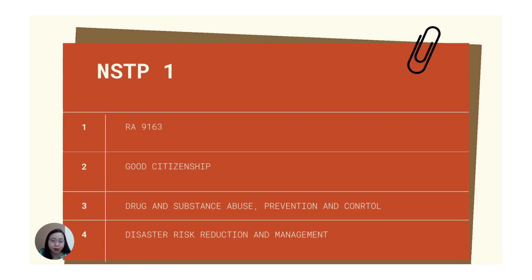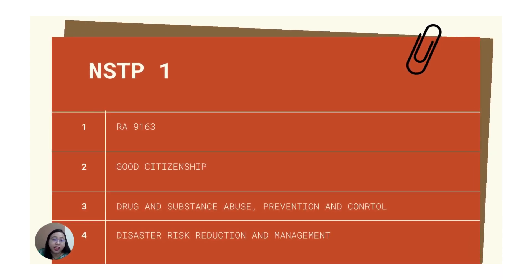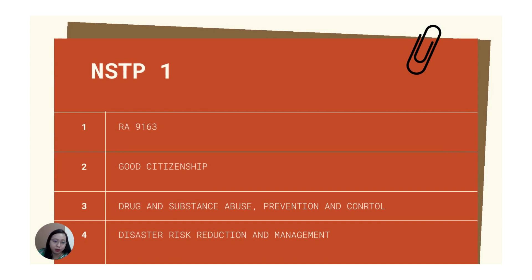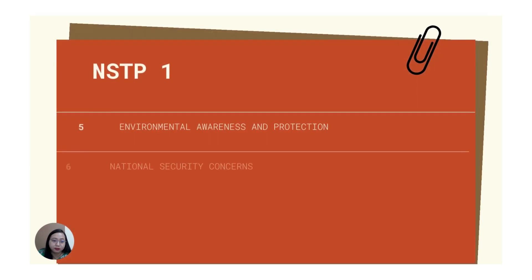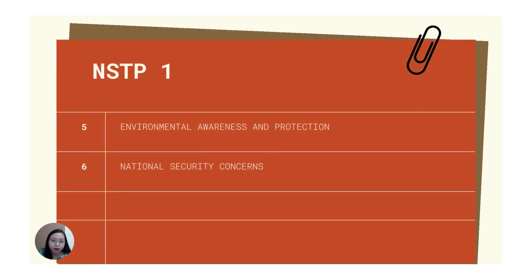In your NSTP-1, you were taught regarding the NSTP law or RA 9163. Also, good citizenship, drug and substance abuse prevention and control, disaster risk reduction and management, environmental awareness and protection, and national security concerns. All these concepts and lessons were taught to you during the first semester. That is why in NSTP-2, you are expected to apply all these learnings through community immersion.